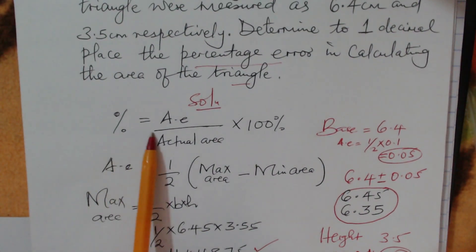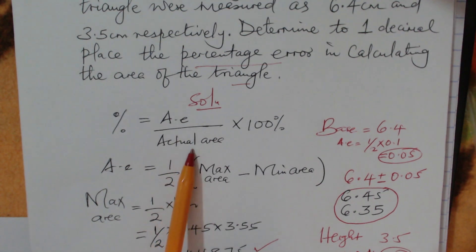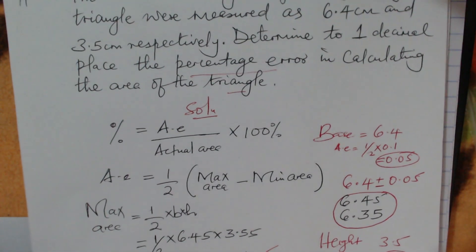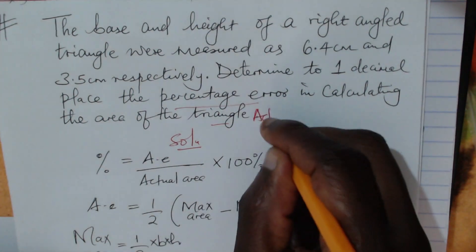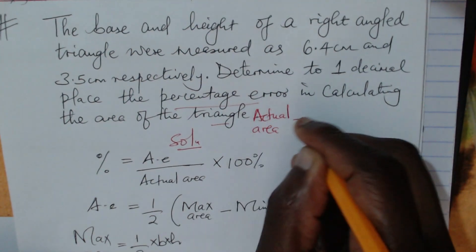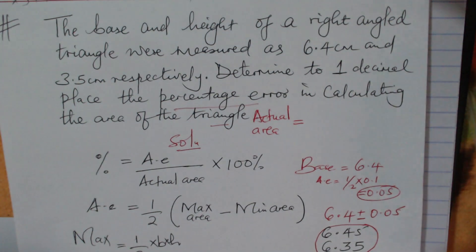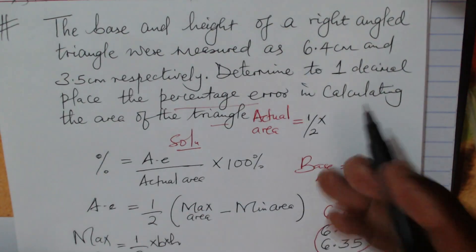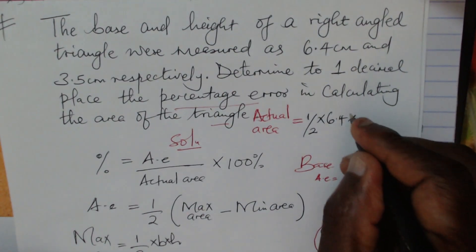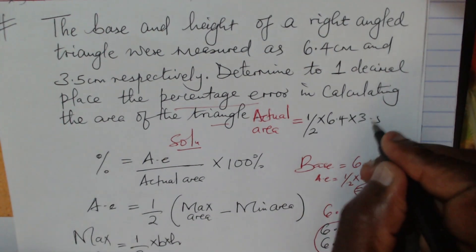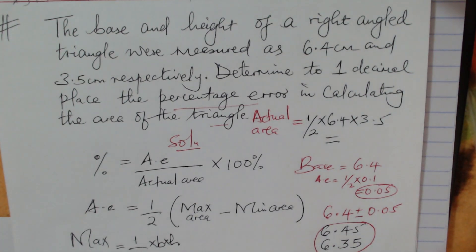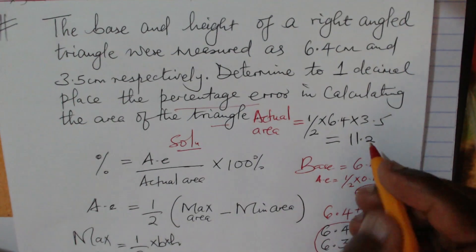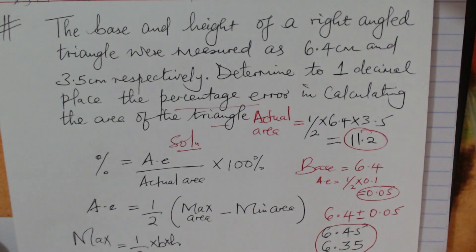Now the percentage error equals the absolute error divided by the actual area. We need to find the actual area using the actual measurements: one half times the base 6.4 times the height 3.5. This gives an actual area of 11.2 centimeters squared.